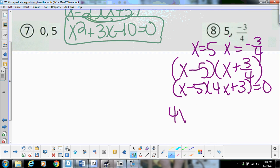And then when you distribute out, you're going to get four x squared. This is going to be plus three x minus twenty x, which is minus seventeen x minus fifteen.